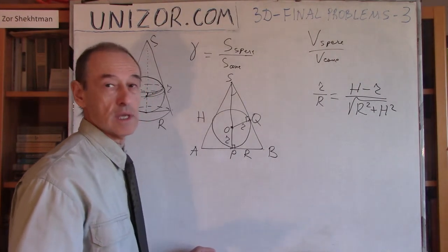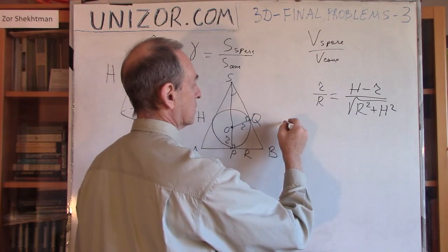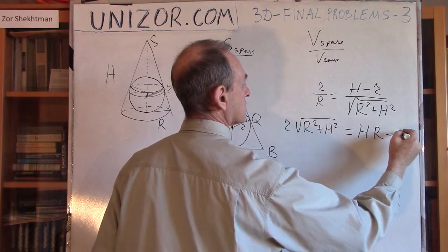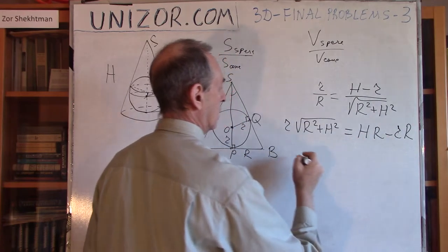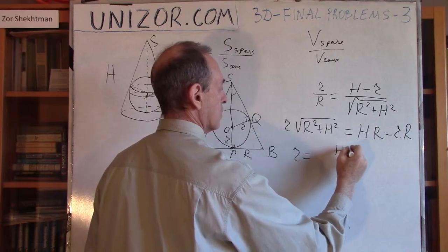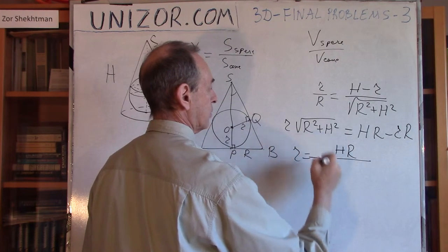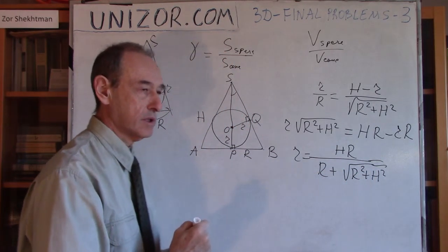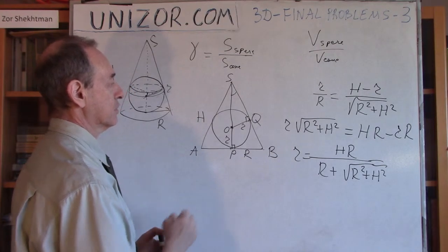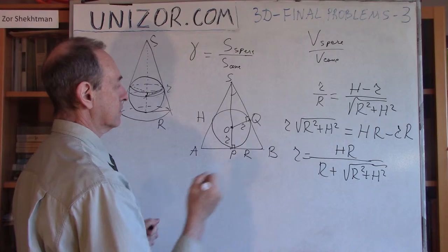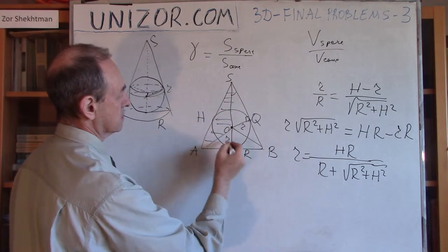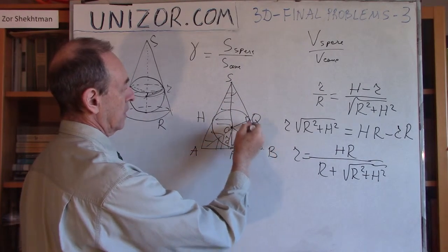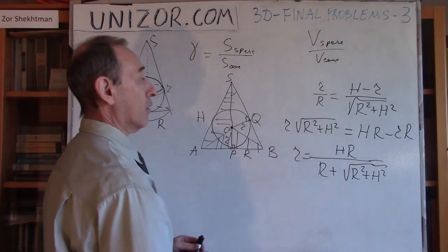I have this equation from which I can determine lowercase r, and that would complete all the elements I need to calculate the areas and volumes. Let's multiply: lowercase r times square root of R squared plus H squared equals HR minus lowercase rR. R goes here equals HR divided by R plus square root of R squared plus H squared. This is exactly the same formula I had in the previous lecture but derived differently using the area of the whole triangle divided into three areas of these triangles.